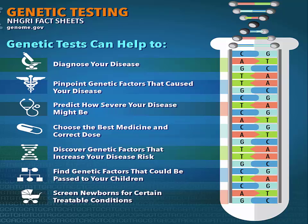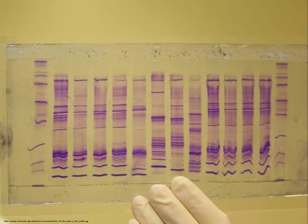DNA fingerprinting begins by extracting DNA from cells in a sample of blood, saliva, semen, or any other fluid or tissue collected. Polymerase chain reaction (PCR) is a quick, easy method to provide unlimited copies of a DNA or RNA sequence using only a small amount of sample. It has been used effectively in distinguishing criminal charges — guilty or innocent — and in paternity testing.